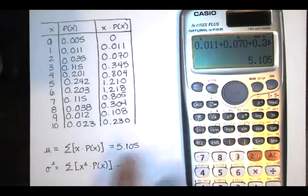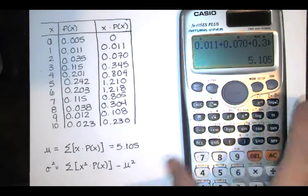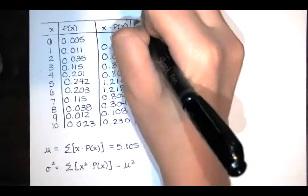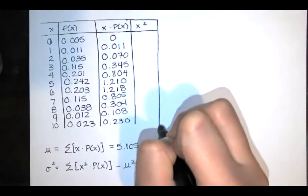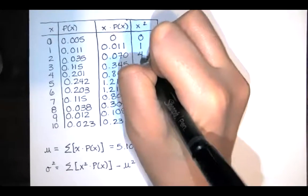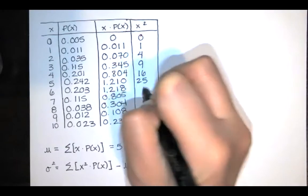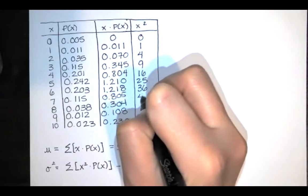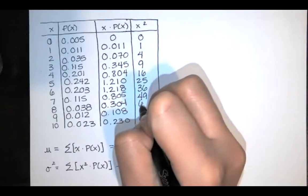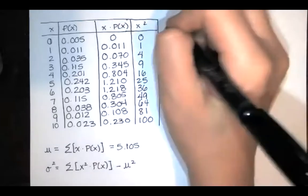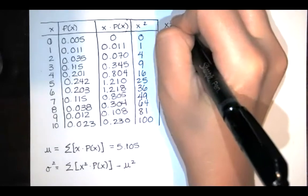So in order to calculate this, first I need the x's squared. I'll put those in this column. So I have 0, 1 squared, 2 squared, 3 squared, 4 squared, 5 squared, 6 squared, 7 squared, 8 squared, 9 squared, and 10 squared. And we're taking those and we're multiplying by probabilities.